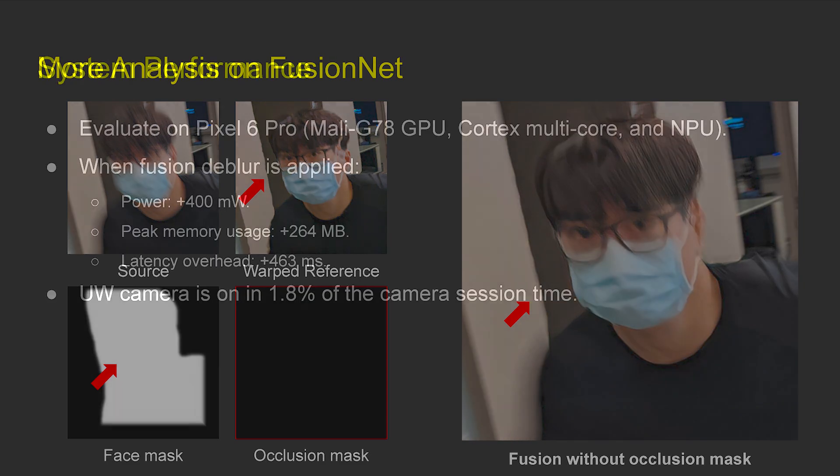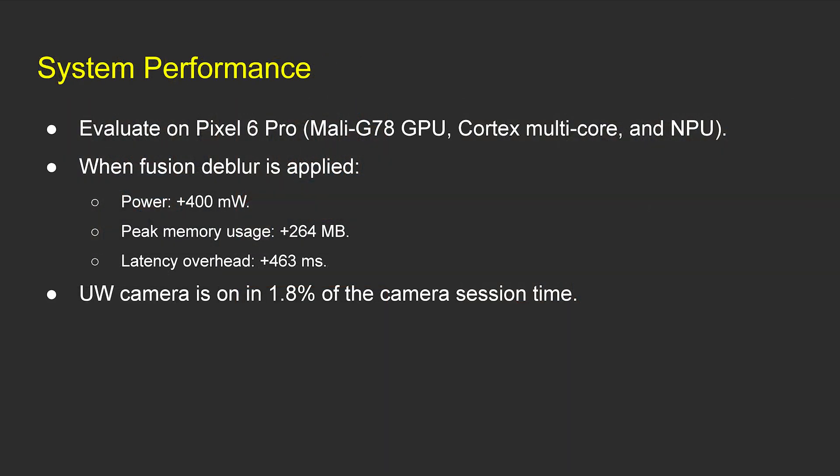Here we show the device performance when running our system on Pixel 6 Pro. On average, our adaptive streaming system turns on the ultra-wide camera in only 1.8% of the camera session time, and the average amortized power and memory cost are fairly low.